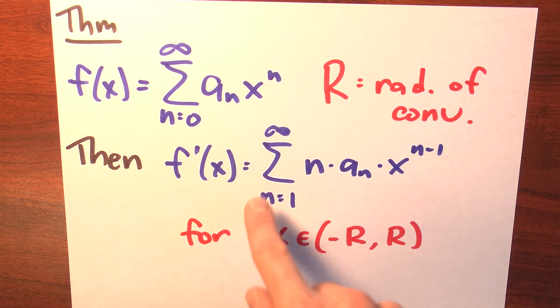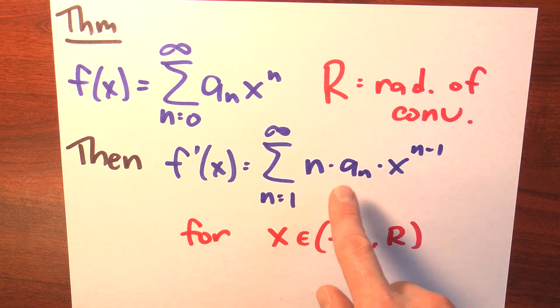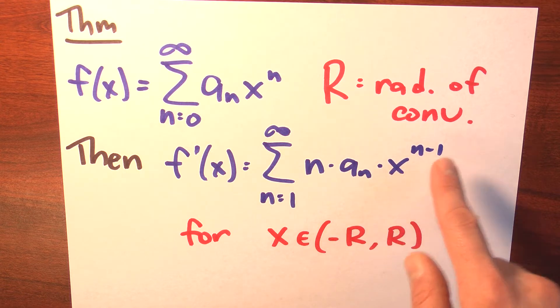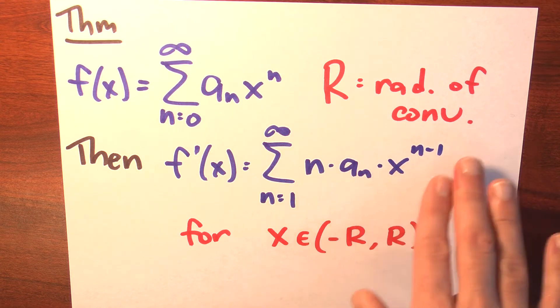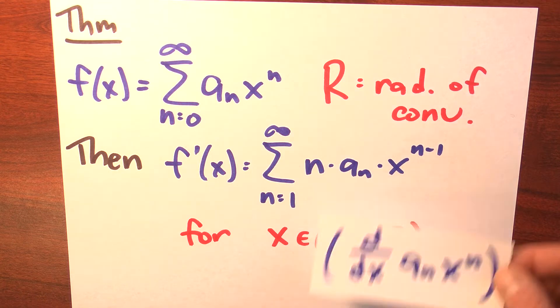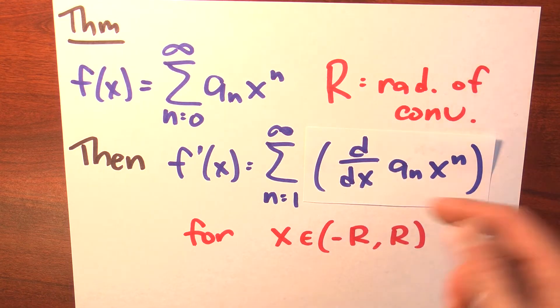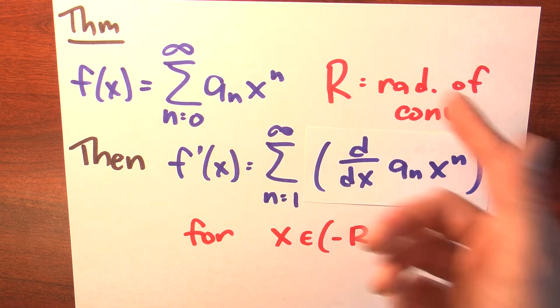Now here's the theorem then. The derivative of this function f is this. Notice the sum n goes from 1 to infinity of n times a sub n times x to the n minus 1. And if that looks mysterious, where is that coming from? Well, that's just the derivative of a sub n times x to the n.